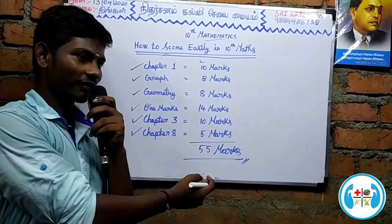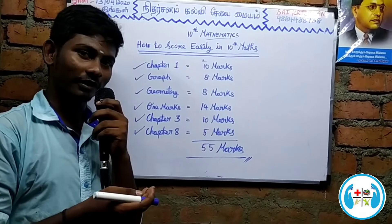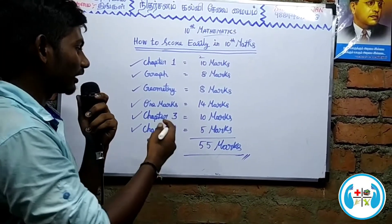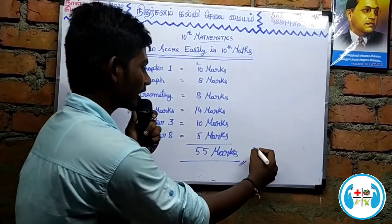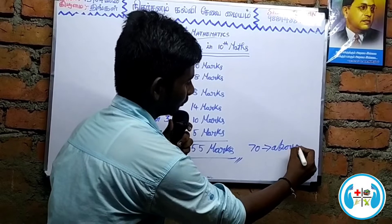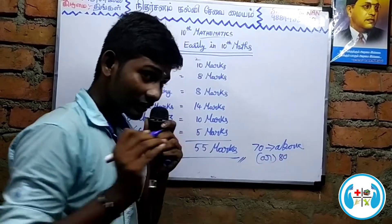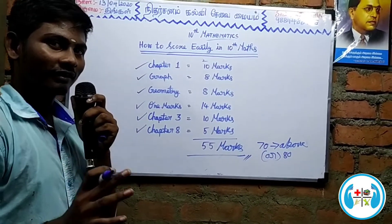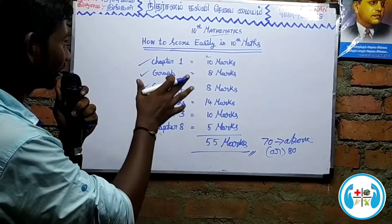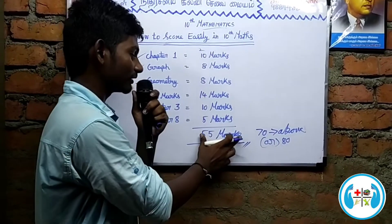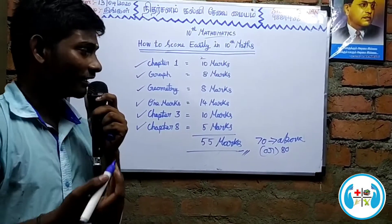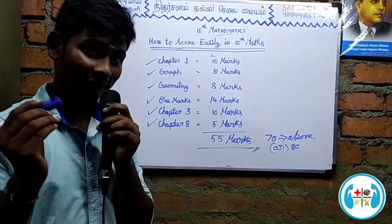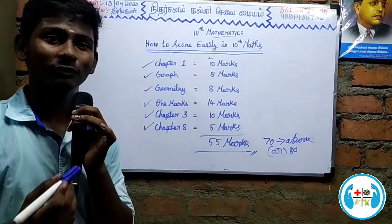If you cover all the marks and follow along, you have 55 marks. If you write more than 50 marks, you can do it. All the marks are easy for you to write. It's a very useful thing.